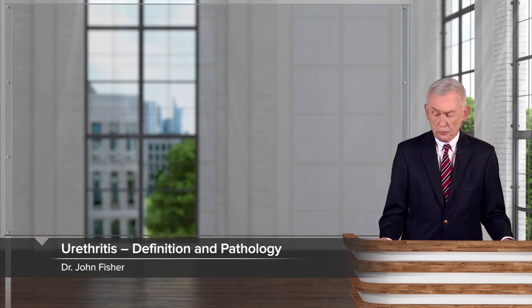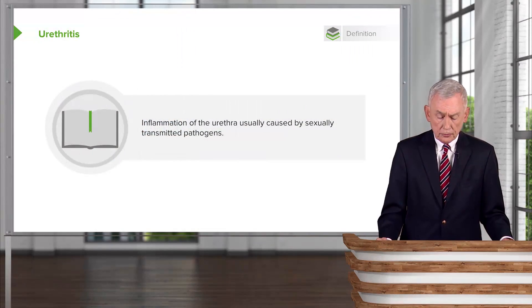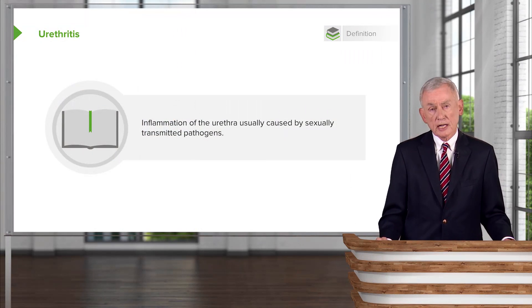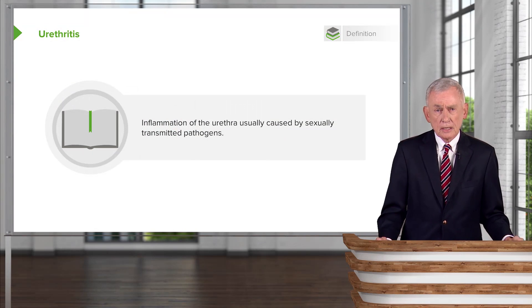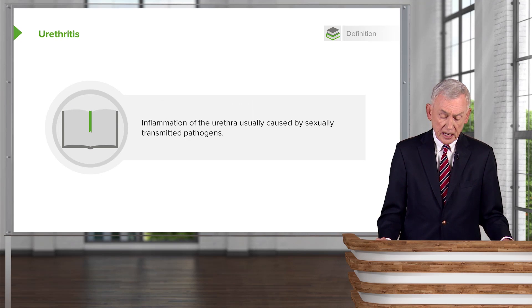We continue our discussion, now turning to the subject of urethritis. We define urethritis as inflammation of the urethra caused by sexually transmitted pathogens. This is to be distinguished from the organisms that cause urinary tract infections.